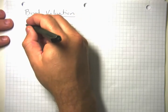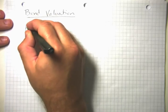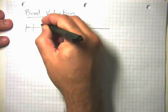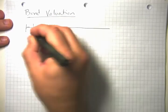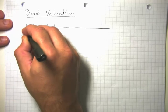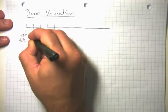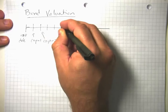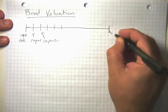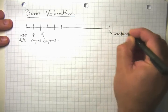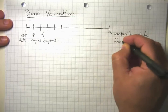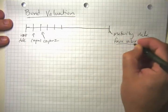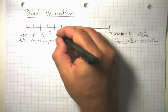Realize that what happens with a bond is there's the initial issuance, and then the bond goes along over time making periodic payments called coupons. Here's the issue date, coupon one, coupon two, and so on over time until eventually we get to the maturity date, at which point the bond pays out its face value or par value.